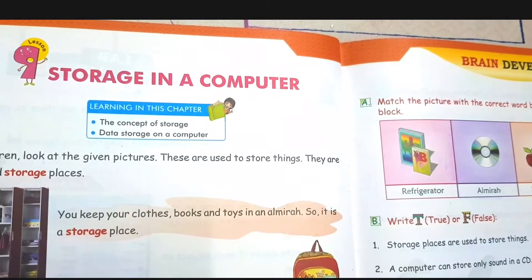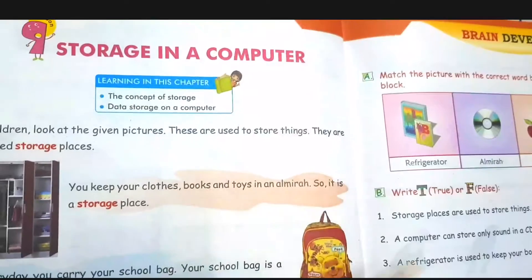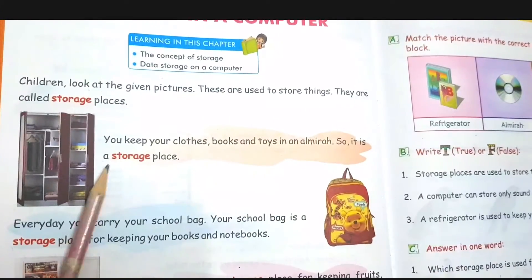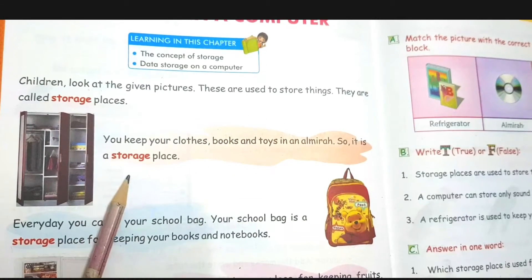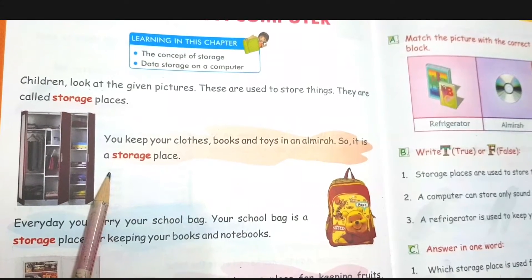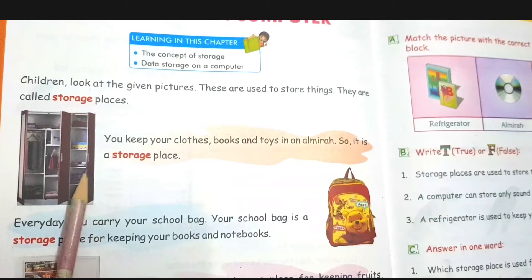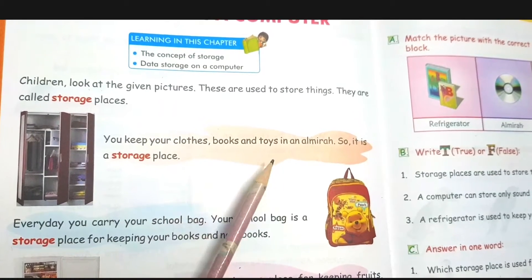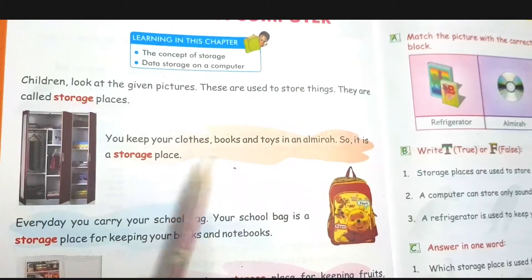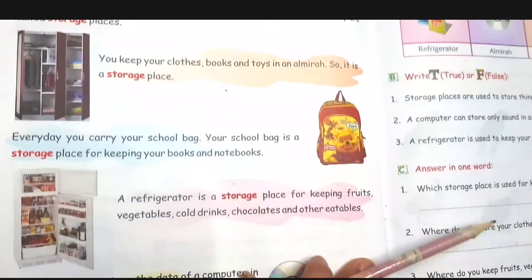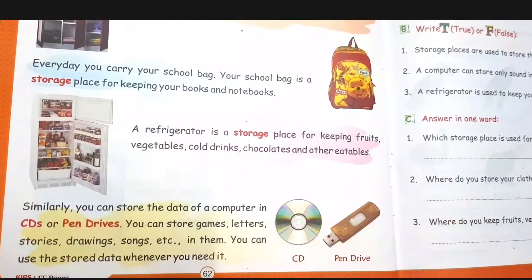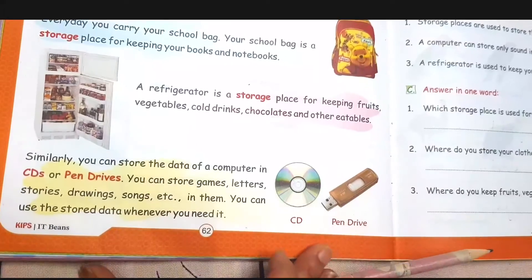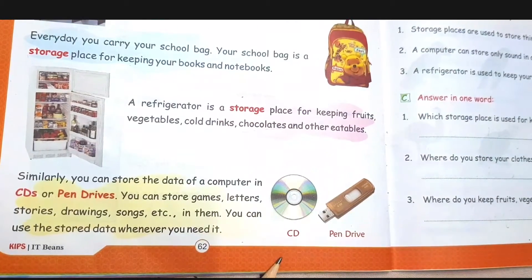What is storage, children? Can you look at this picture here? These are used to store things. For example, this is an almirah — the storage where you can keep your toys and your clothes. And this is the refrigerator where you keep all your fruits, vegetables and cold drinks. Like that, we also have storage devices where we can store data in the computer.